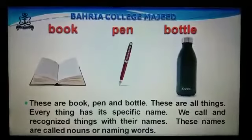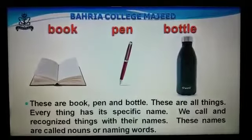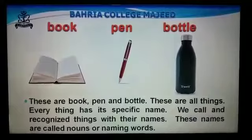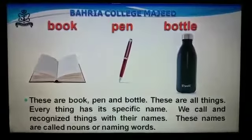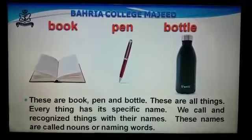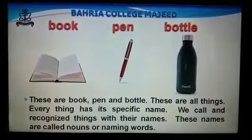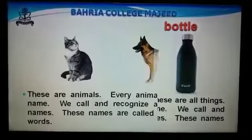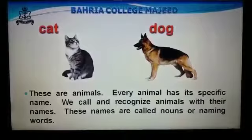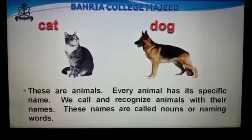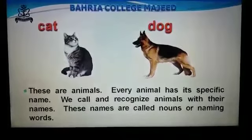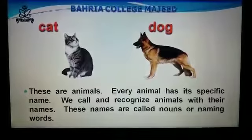Now you can see the pictures on your screen. You can see that these are animals. Every animal has its specific name. We call and recognize animals with their names. These names are called nouns or naming words.